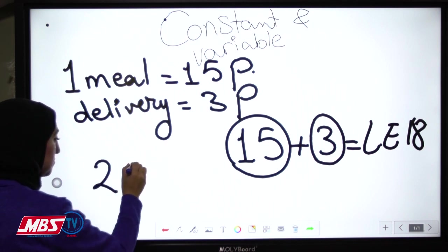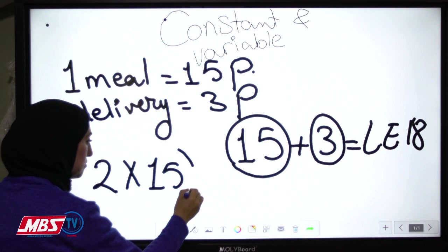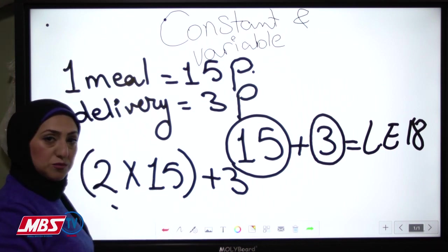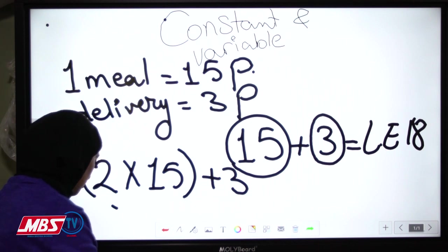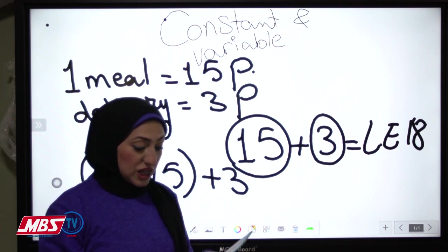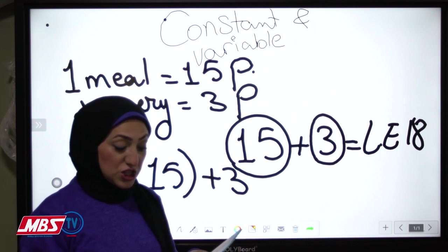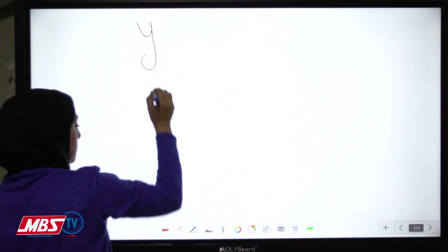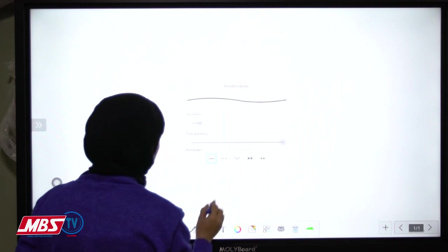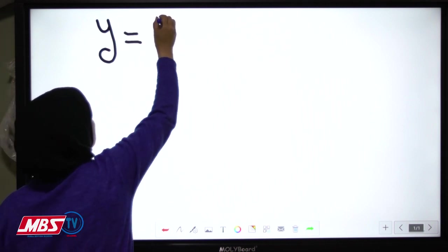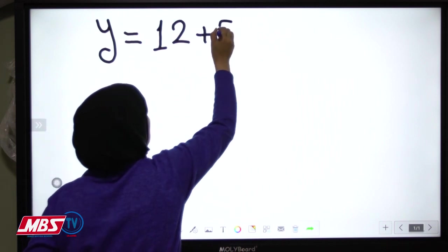If you take two meals, it will be 2 times 15 plus 3 for delivery. The 3 is constant and the 15 is variable. Now let's see another example: the owner pays a daily wage according to the mathematical relation y equals 12 plus 5x.